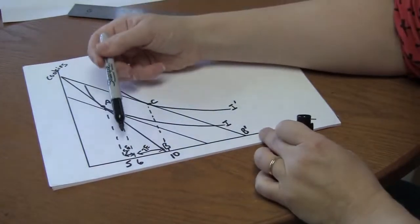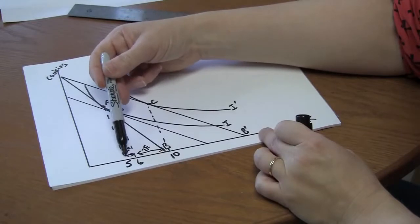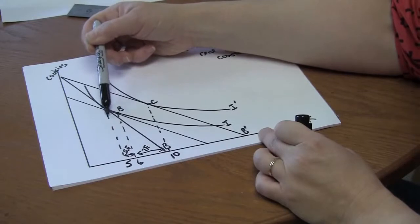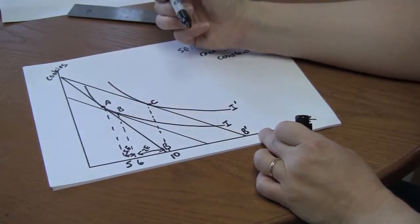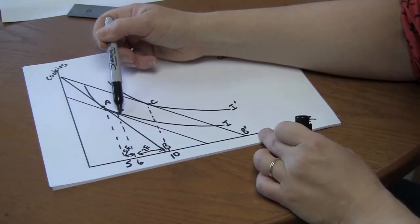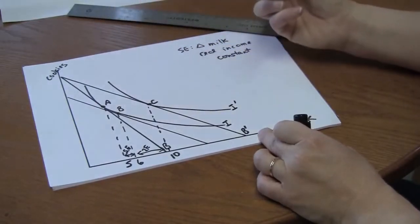So from five to six. So this distance here. This horizontal distance between A and B is the substitution effect. The distance between B and C is the income effect.